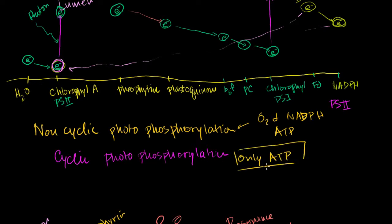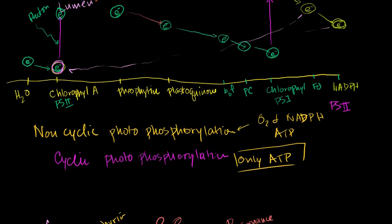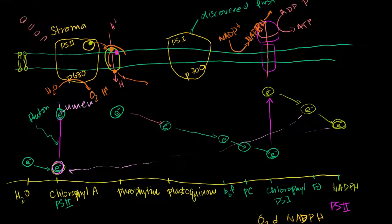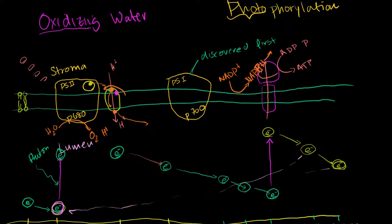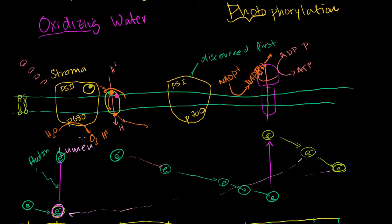So I think we now have a very good understanding, hopefully, of the light reactions in photosynthesis. We're now ready to take the products of this — and let's remember what the products were. The oxygen just gets eliminated — we don't need the oxygen anymore, but that goes into the atmosphere.